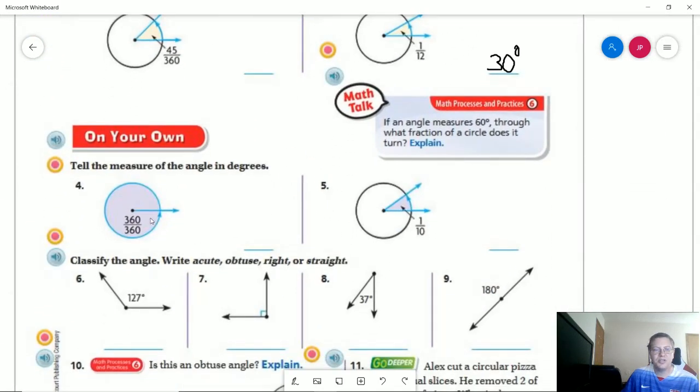For the on your own we are counting the entire thing. So that would be 360 degrees. This one, one tenth. So to get to 360 we can multiply 10 by 36. Which means we can multiply this by 36. And that would give us a 36 degree angle.